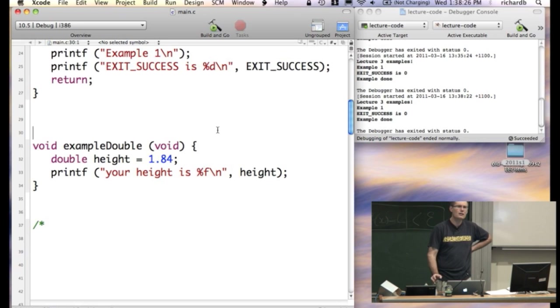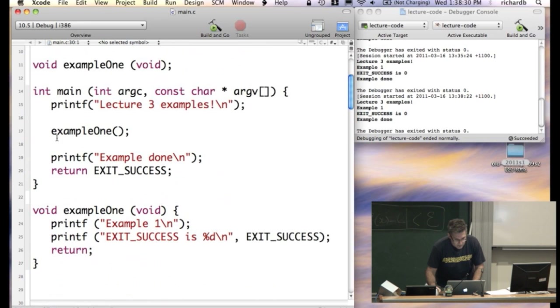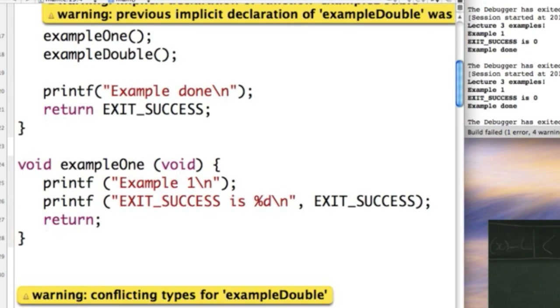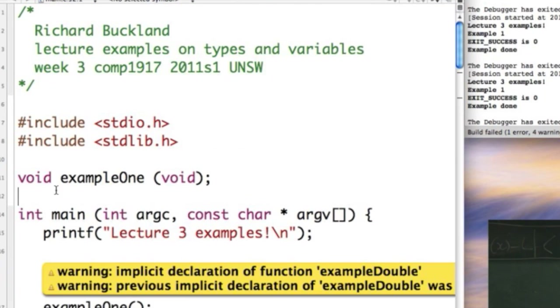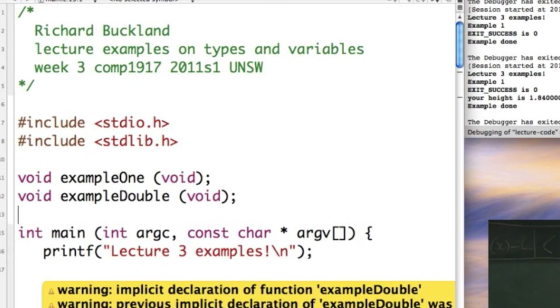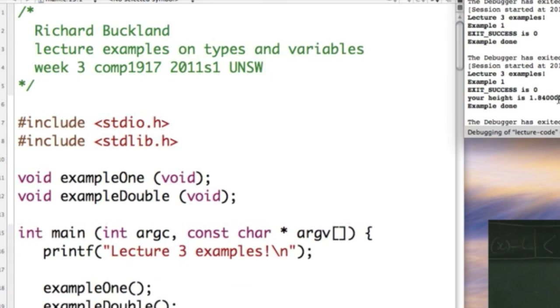Oh, it didn't print it out. Why not? We didn't call the function. So, we better call it. What's it called? Example double. Example double. Oh, it doesn't understand it. Implicit definition. We're using it now before it's been defined. So, thank you. I have to define it up here. Declare it up here. Sorry, not define it. And it prints it out. Your height is 1.840000.